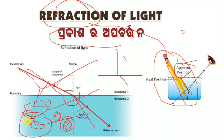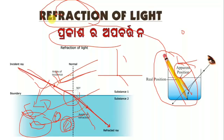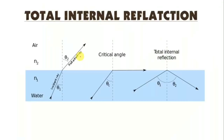I'm going to read the question. The question is: how much light will be applied for the light of the water so it will not be applied? What is the answer? We will write: total internal reflection.